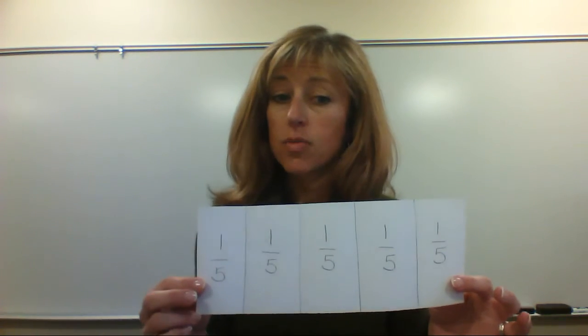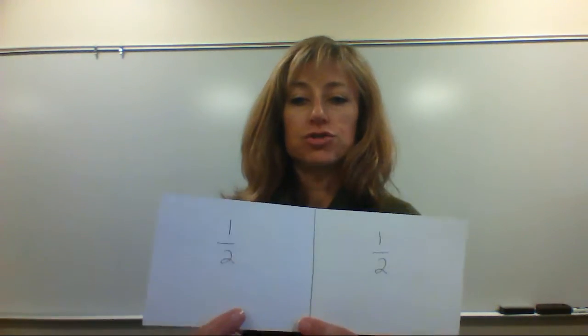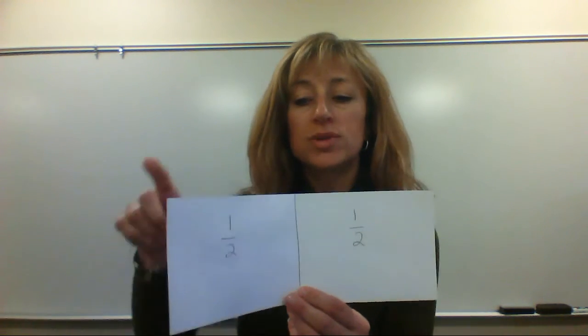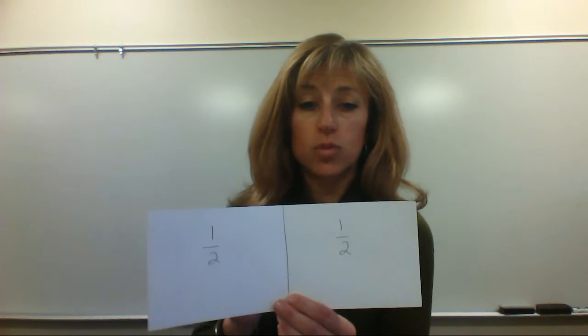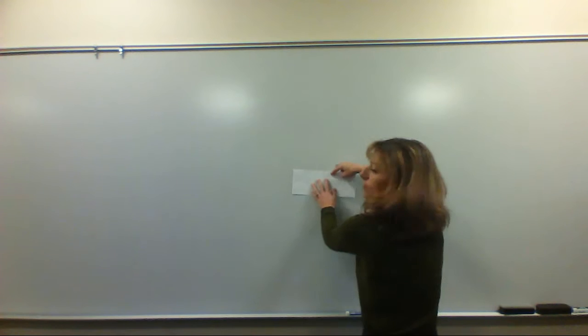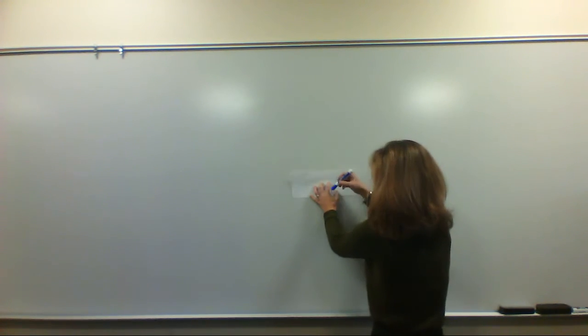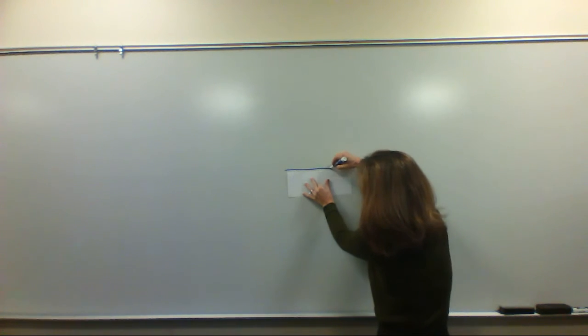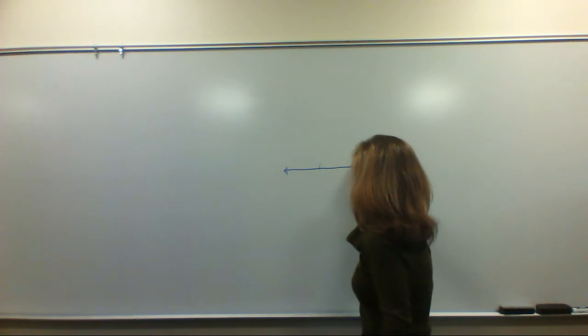We will use these at another point but for right now let's go back to using our halves, our fraction strips with the halves on it. What I'd like you to do is take your fraction strip and use it as a ruler on your dry erase board. We're going to make a number line. So watch me first and then you'll do the same thing. Go a little bit longer than the length of your fraction strip and use your fraction strip to locate the middle and the ends.